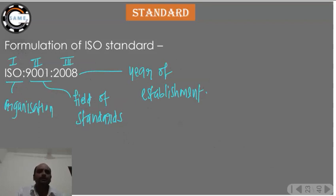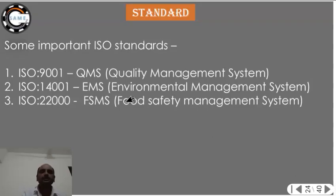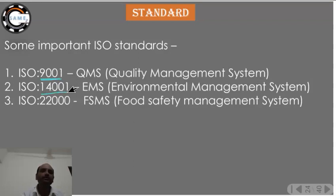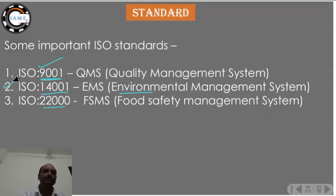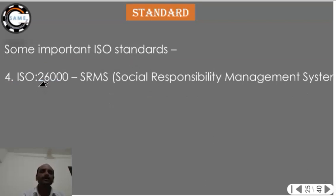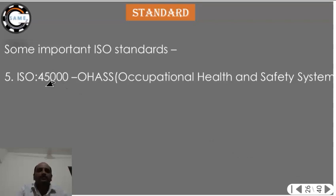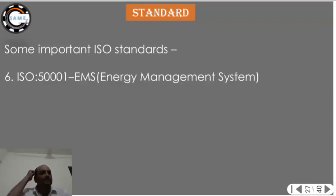Some important standards include: ISO 9001 — Quality Management System; ISO 14001 — Environmental Standard; ISO 22000 — Food Safety Management System, which is important for automobile engineers. ISO 26000 is the Social Responsibility Management System.